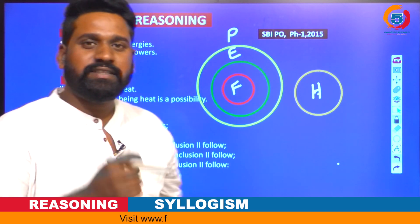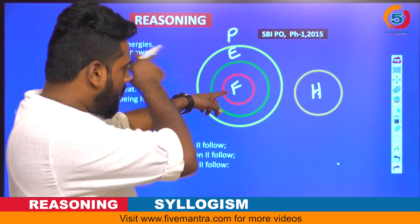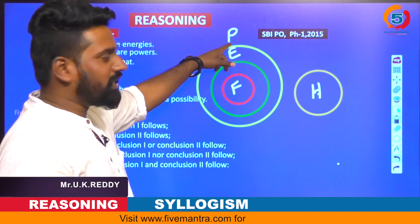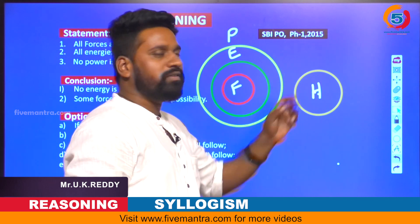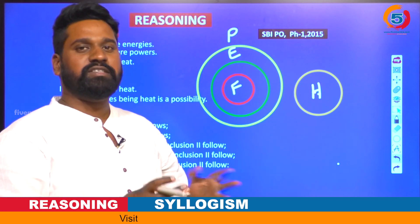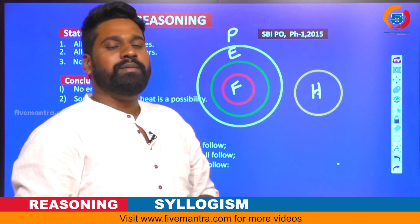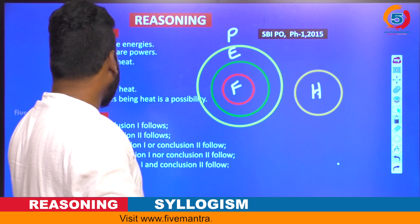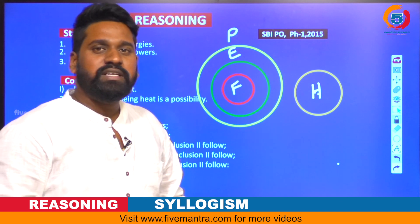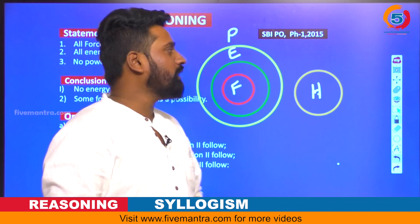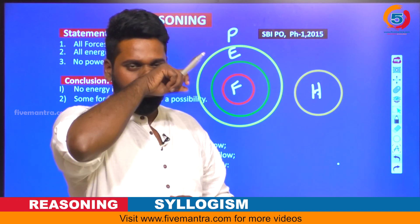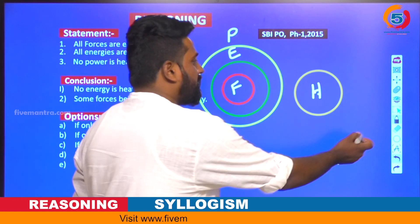From the Venn diagram: all forces are energies, all energies are powers, and no power is heat — meaning there is no contact between powers and heat. Now checking the first conclusion: no energy is heat. Is this correct?